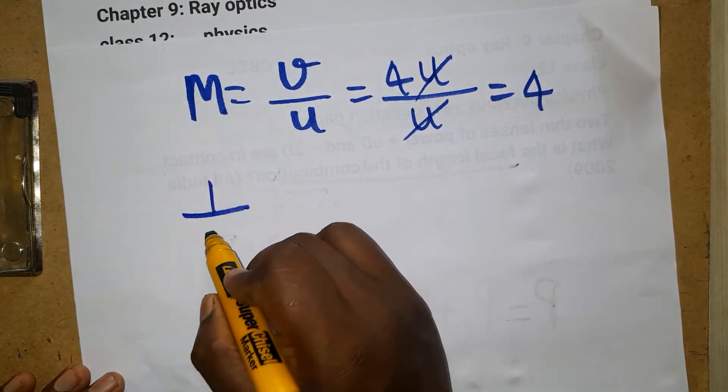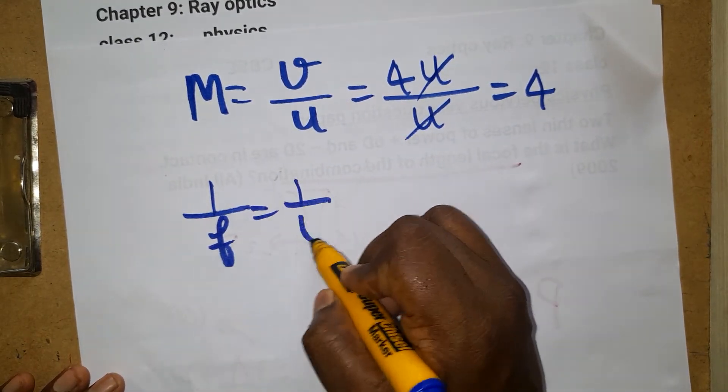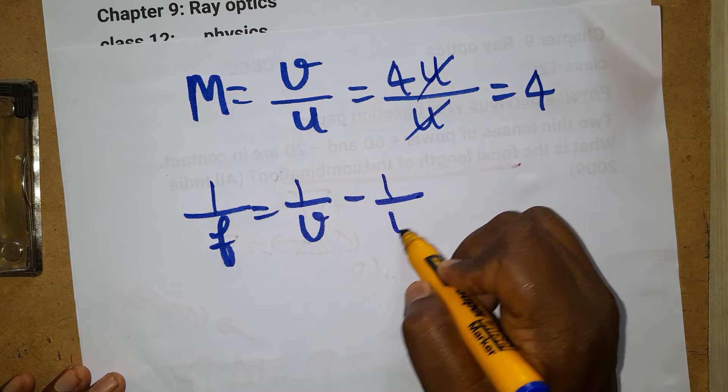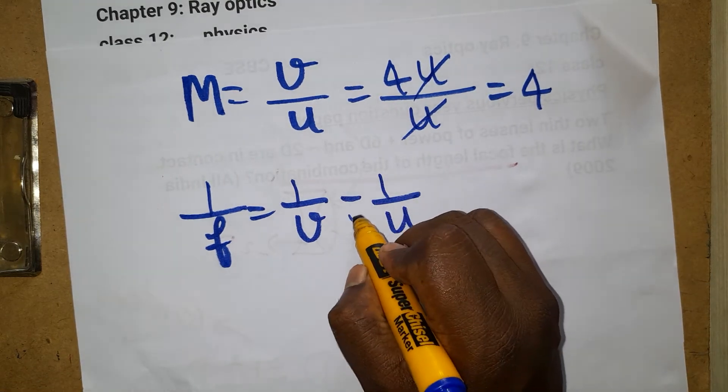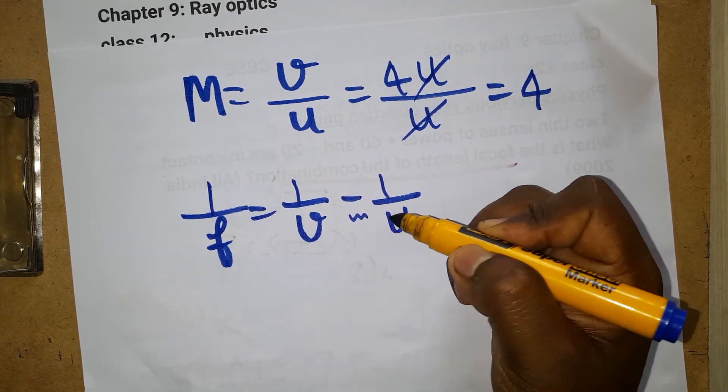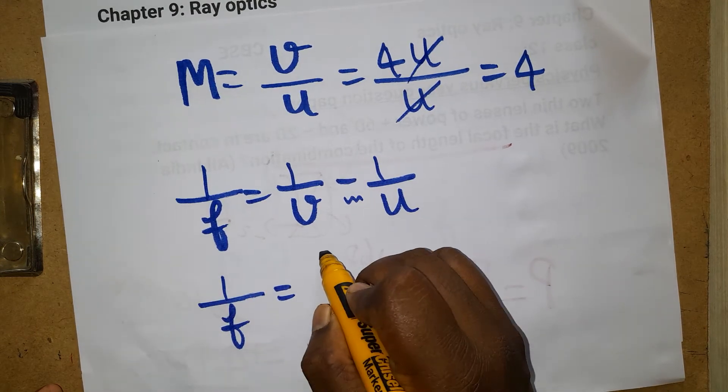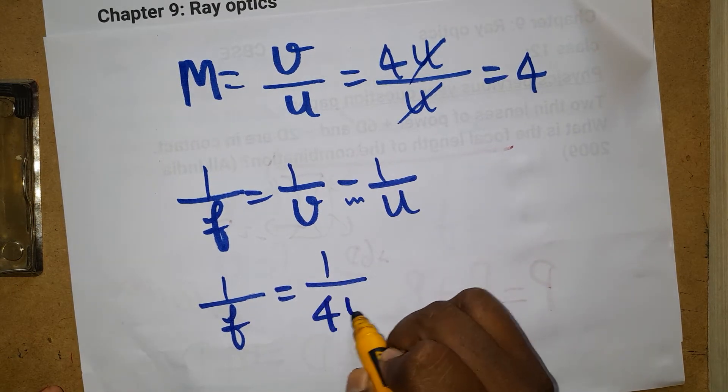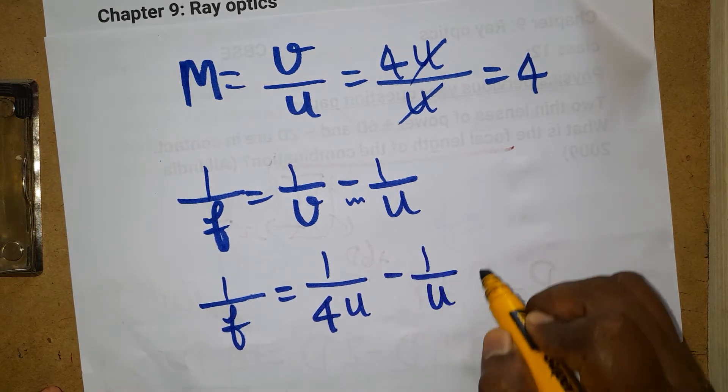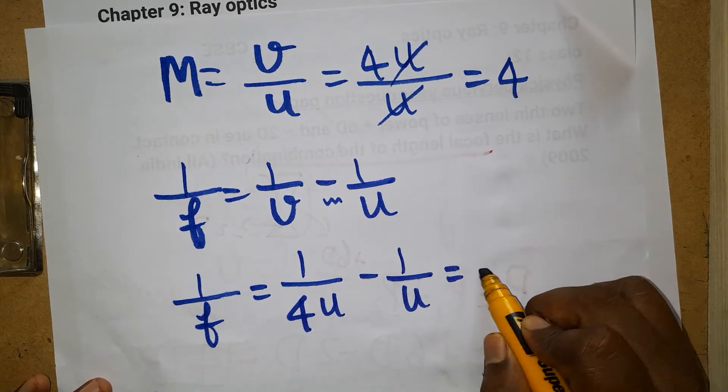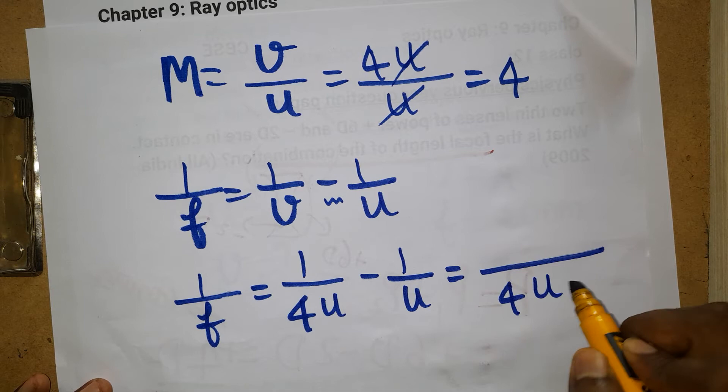Now it is the focal length. 1 by f is equal to 1 by v minus 1 by u. This is the lens formula. Here minus will be there. For mirror formula you can use plus. So 1 by f, v is going to be 4 times u minus 1 by u. It's a very simple problem. 4 times u, just cross multiplication.